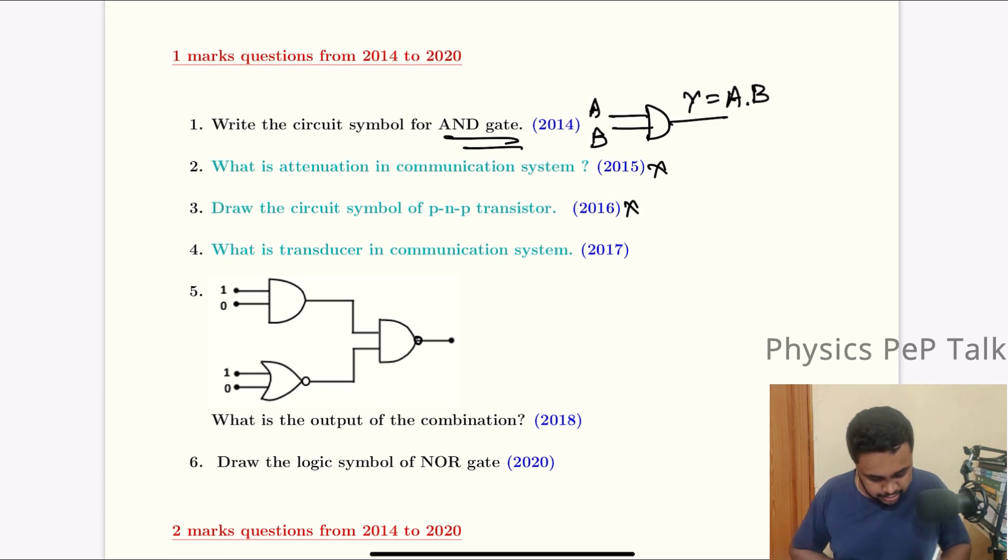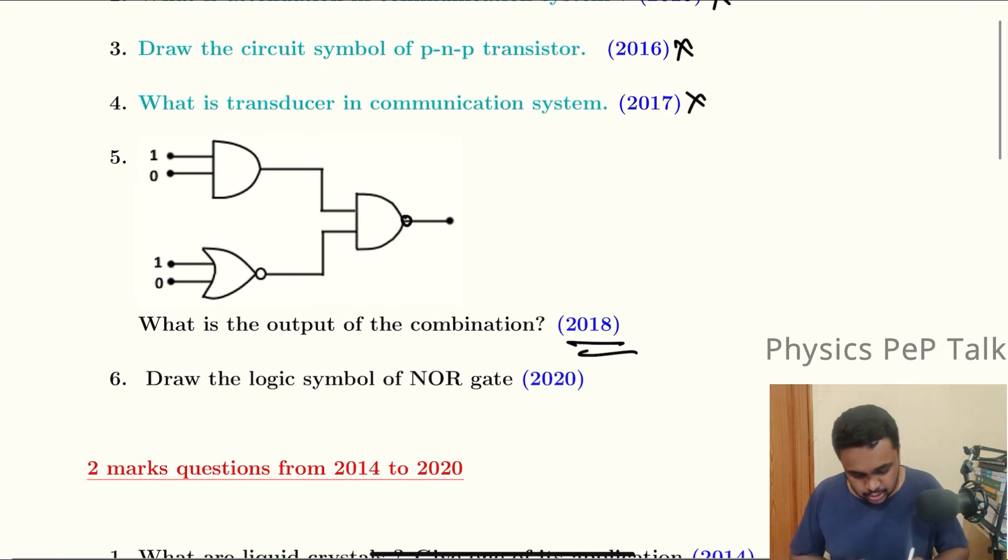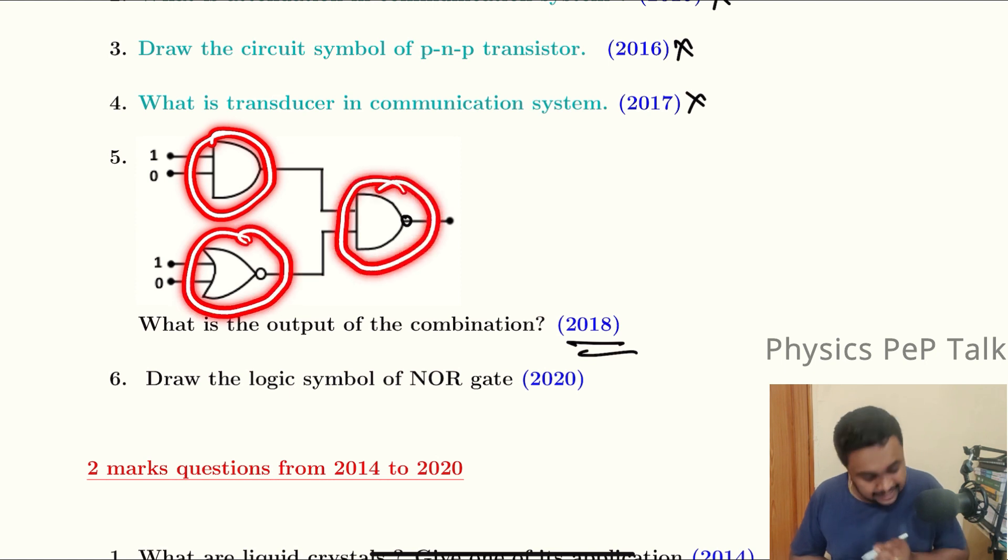We will discuss the deleted portion. In 2018, we will discuss the complex circuit - what is the output of this? See, this is the AND gate, this is the NOR gate, this is the NAND gate, right?